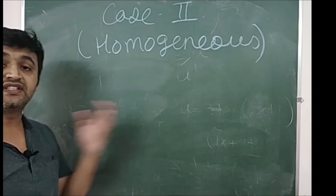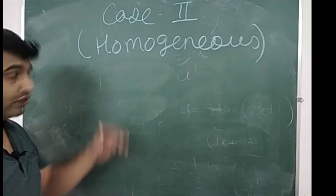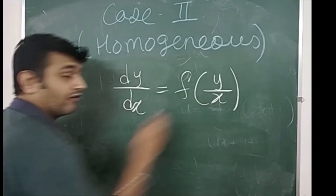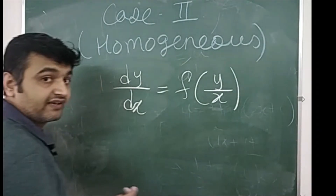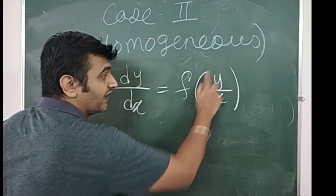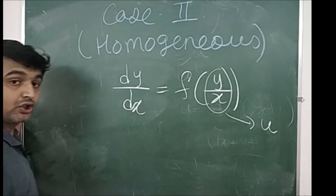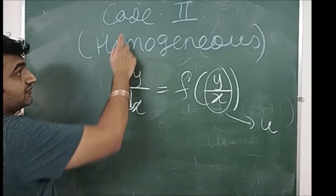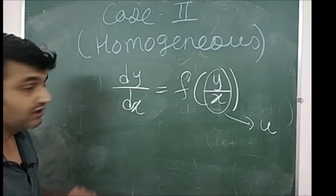After this, let me tell you the second case, which is called a homogeneous differential equation. You will encounter the word homogeneous again in higher order differential equations, but don't get confused. Whenever you can write your first order linear differential equation as dy/dx = f(y/x) — that is, the right hand side can be expressed purely as a function of y/x — then you can substitute y/x = u and reduce it to variable separable form.